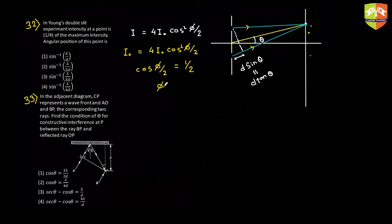So phi by two should be equal to what angle? Phi by two will be equal to pi by three. So the phase difference should be equal to two pi by three.